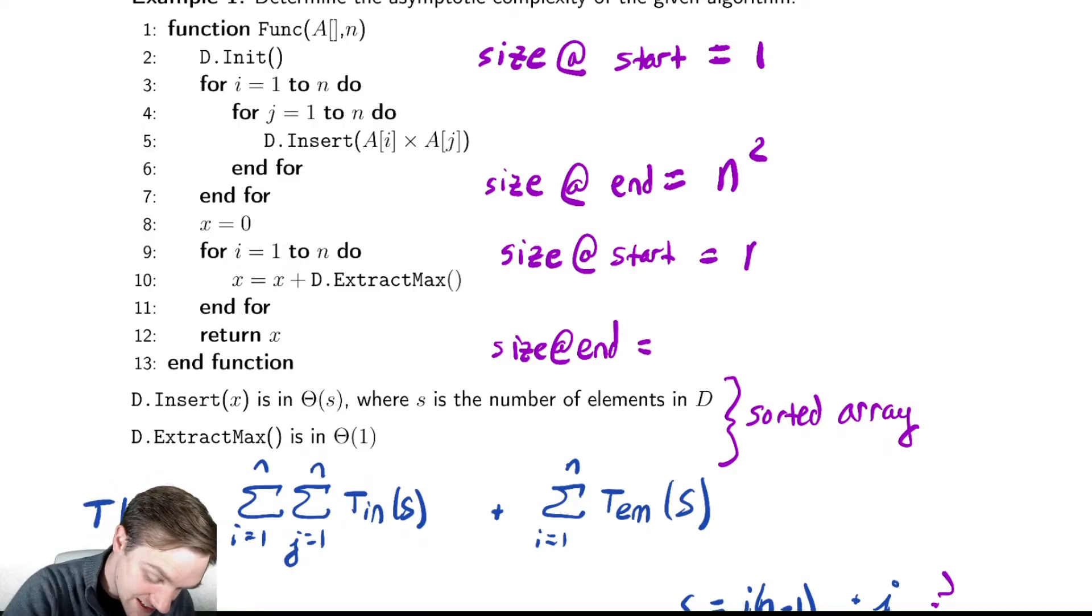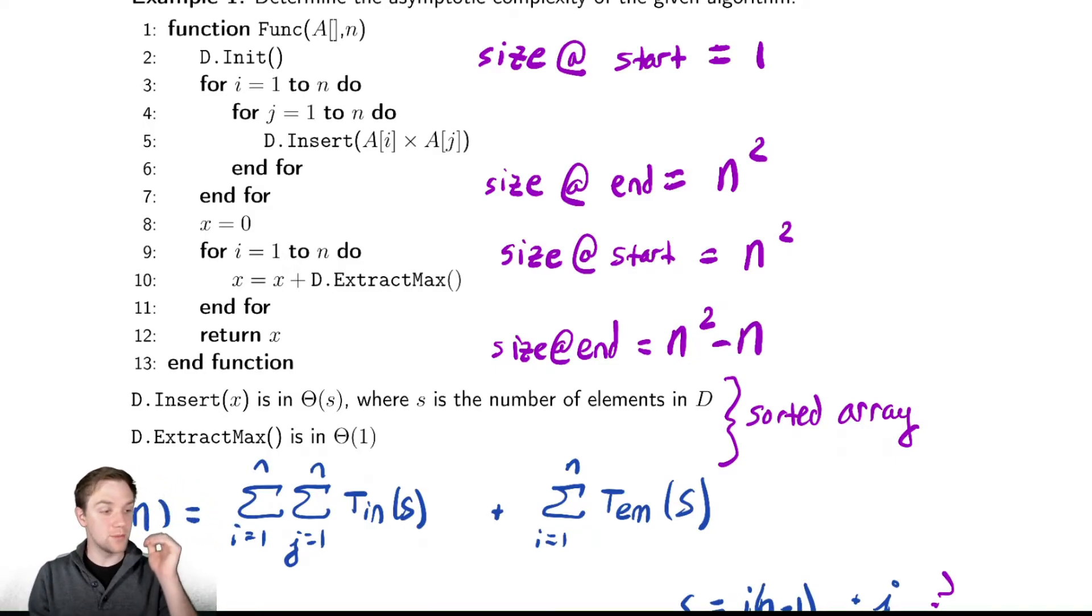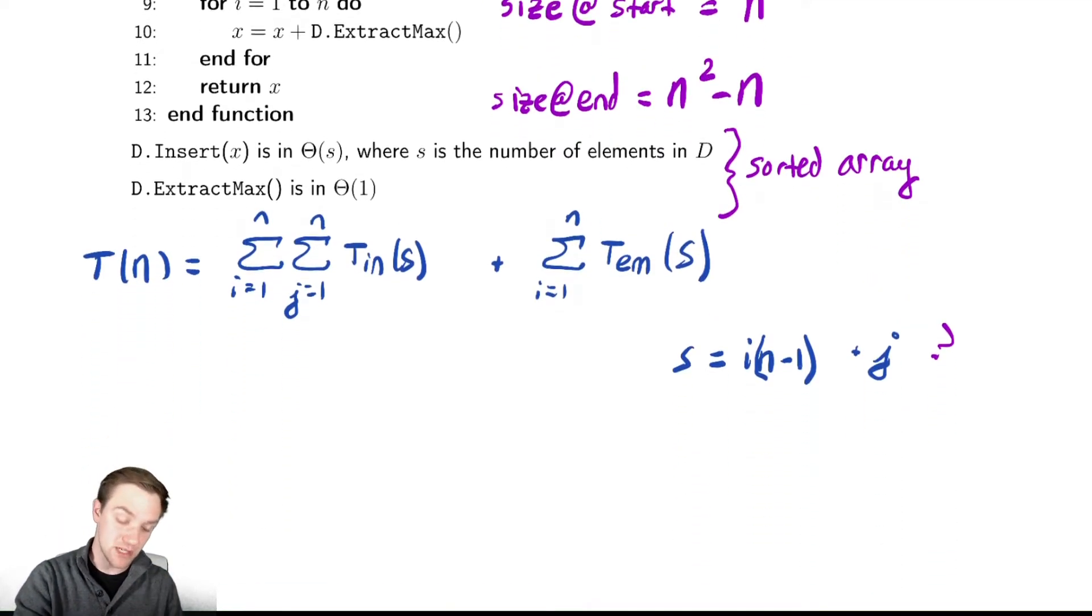So the size at the start here has to be n squared, because the size does not change between these two loops. And after I'm done running through this loop, I will have extracted n elements, so the size goes down to n squared minus n. And now, this is actually a little bit easier to understand what's happening. Let us re-express this summation using that information.